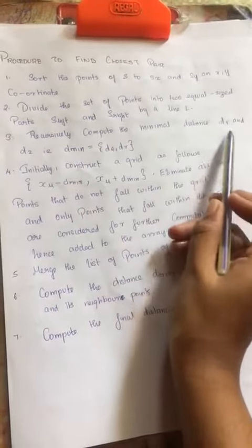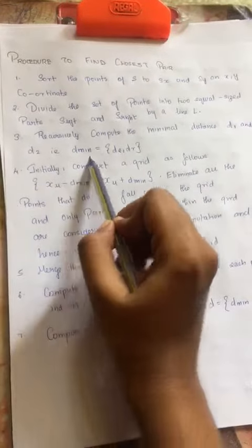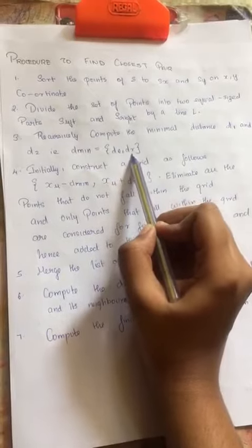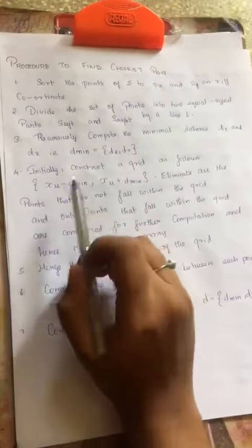Recursively compute the minimal distance d1 and d2, d minimum, d length, and radius. Initially construct a grid. This is the grid.